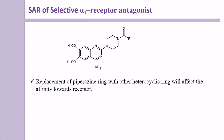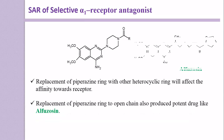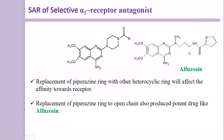The next point is: replacement of the piperazine ring with another heterocyclic ring will affect the affinity towards the receptor. For example, if you replace this piperazine ring with an open chain, it also produces a potent drug like Alfuzosin. Here is the structure of Alfuzosin, in which instead of a piperazine ring, it has an open chain — and even with this open chain, the compound retains its potency.